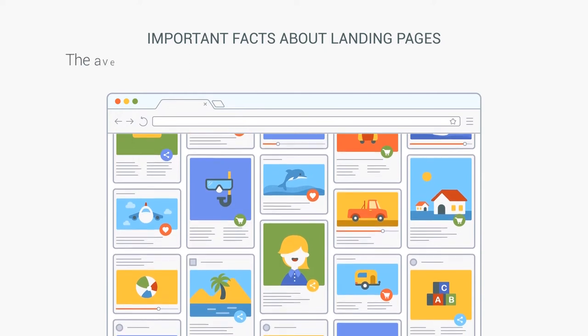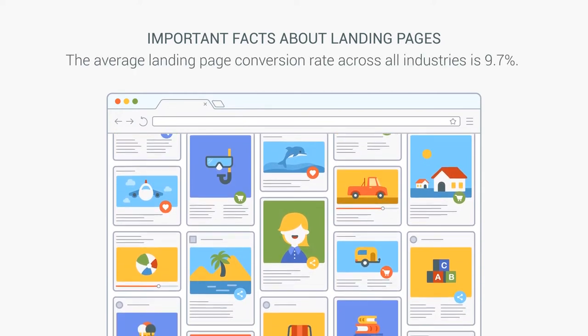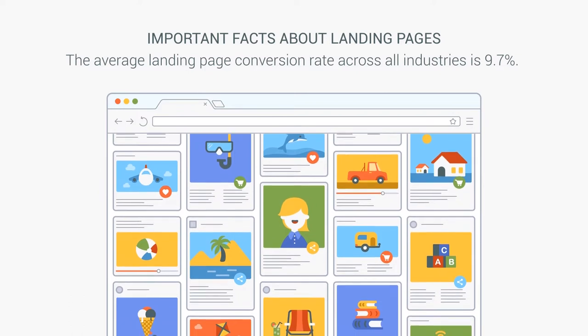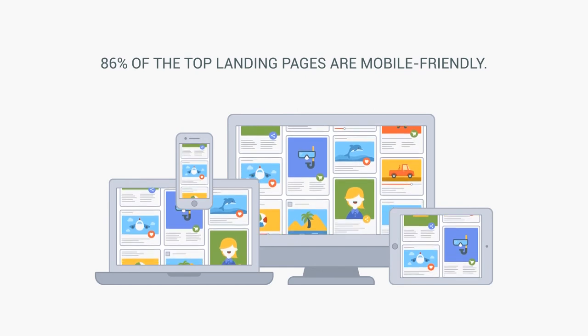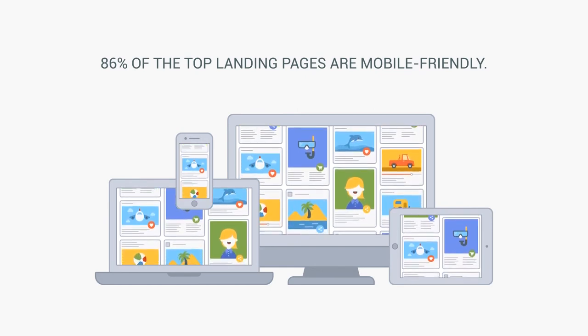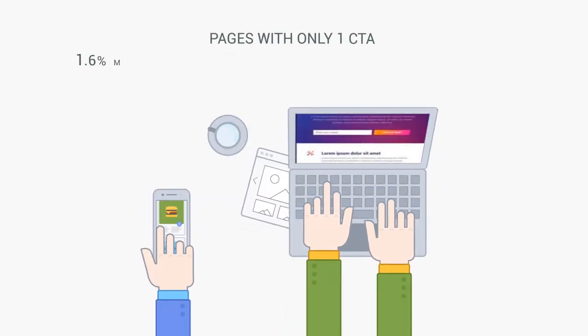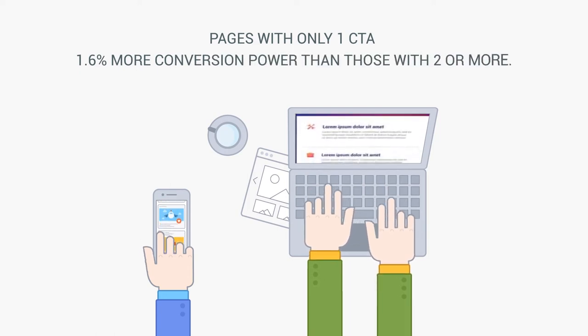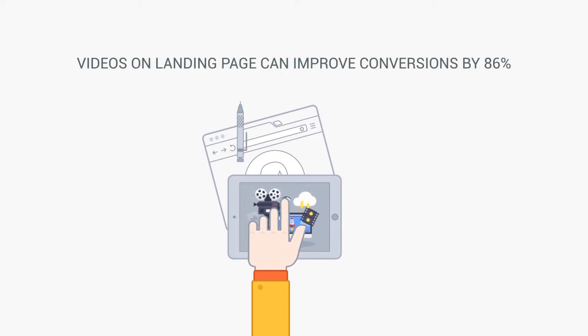The average landing page conversion rate across all industries is 9.7%. 86% of the top landing pages are mobile-friendly. Pages with only one CTA have 1.6% more conversion power than those with two or more. Videos on landing pages can improve conversions by 86%.